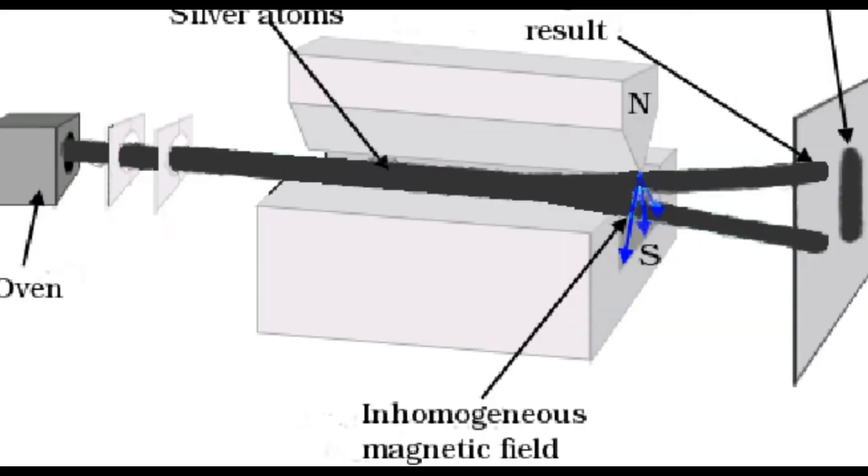This means that we can use magnetic fields to manipulate and measure the spin of subatomic particles. For example, we can use a device called a Stern-Gerlach apparatus to separate a beam of atoms into two beams according to their spin orientation. This experiment was first performed by Otto Stern and Walther Gerlach in 1922, and it showed that atoms have discrete values of spin.